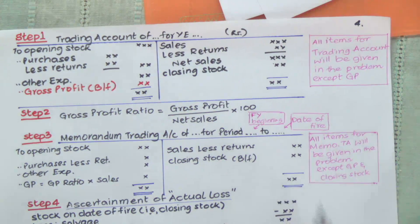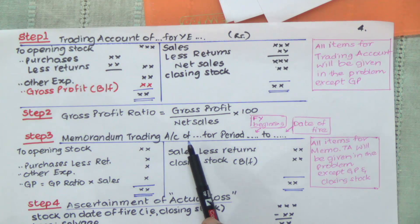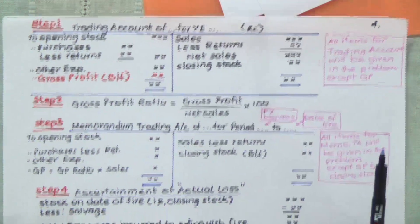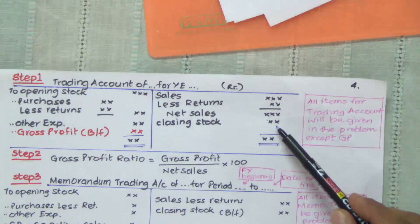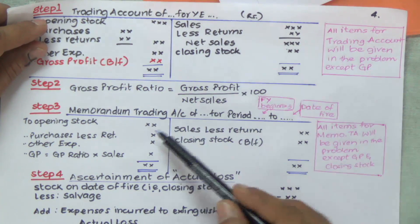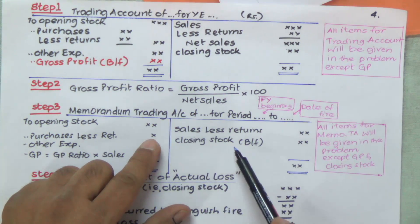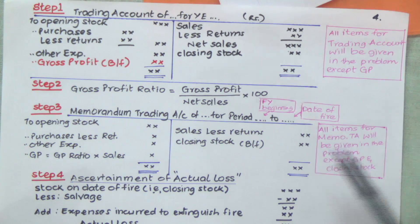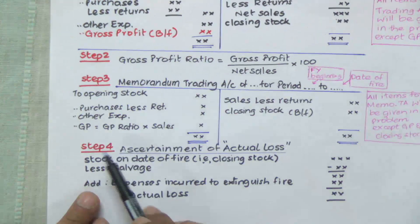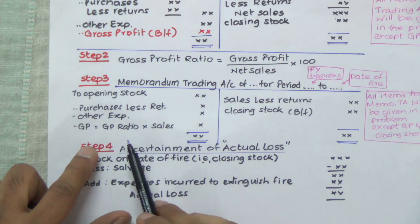The memorandum trading account is an estimate — it is not totally based on accounting principles. It is the memorandum trading account of the firm's name, for the period from the beginning of the financial year to the date of the fire. Whatever was the closing stock of the trading account becomes the opening stock of the memorandum trading account — we just copy that number here; it will not be given in the problem. Sales less returns and purchases less returns and other expenses are taken exactly the same way as before. The only change is for gross profit: in the trading account, gross profit was the balancing figure, but here in the memorandum trading account, gross profit is an arrived figure.